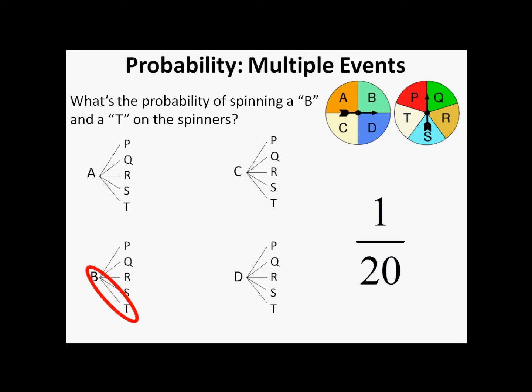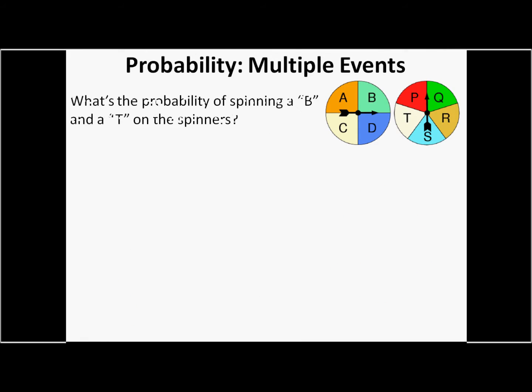Once again, there's an easier way to do this. You can basically find the probability of spinning a B, then find the probability of spinning a T, and you multiply them. One out of twenty. It's a lot easier, isn't it?